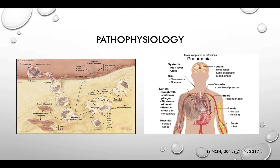CAP due to Strep pneumo, H. influenzae, and other gram-negative bacilli is due to microaspiration. The individual's immune response to CAP depends on the organism involved. Less noxious organisms are typically destroyed by macrophage engulfment, which results in a moderate immune response. On the contrary, if the organism is highly virulent or present in great numbers, a series of immune responses occur, including inflammation, cellular infiltration, and activation of the immune cascade. When patients can't clear pulmonary secretions, a secondary infection may develop.